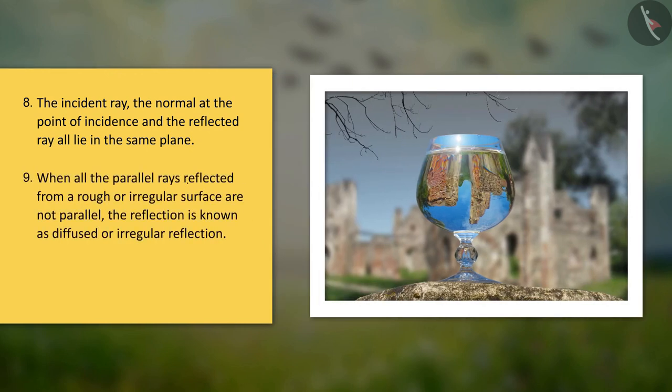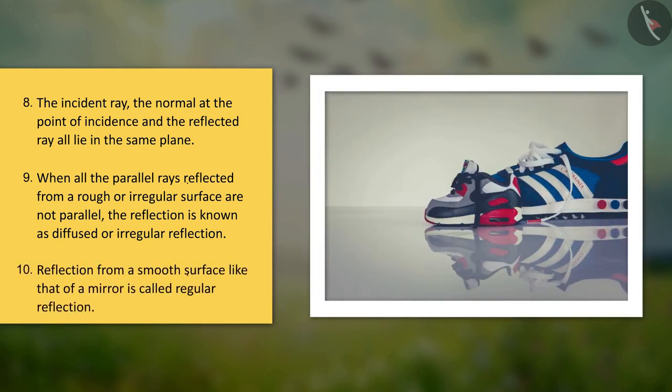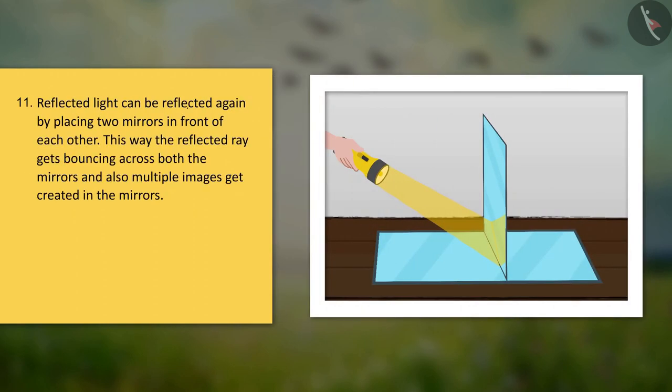When all the parallel rays reflected from a rough or irregular surface are not parallel, the reflection is known as diffused or irregular reflection. Reflection from a smooth surface like that of a mirror is called regular reflection. Reflected light can be reflected again by placing two mirrors in front of each other — the reflected ray keeps bouncing across both mirrors, and multiple images get created.